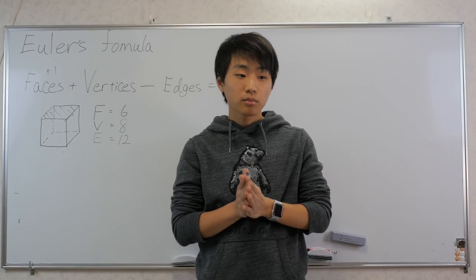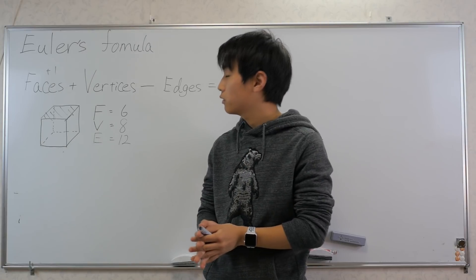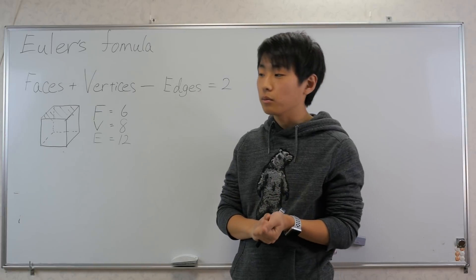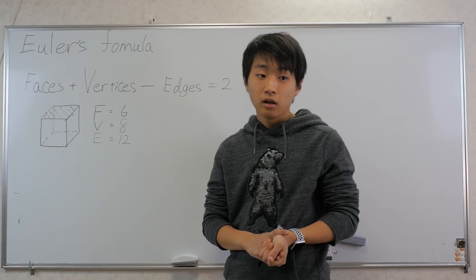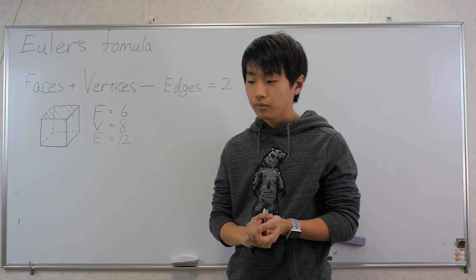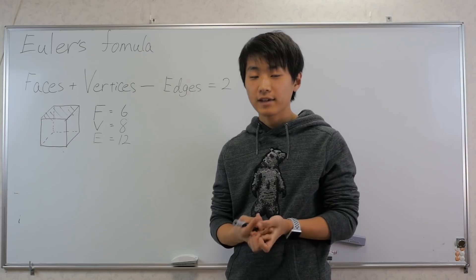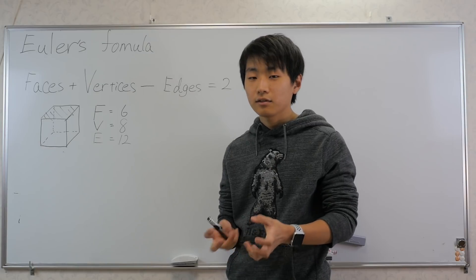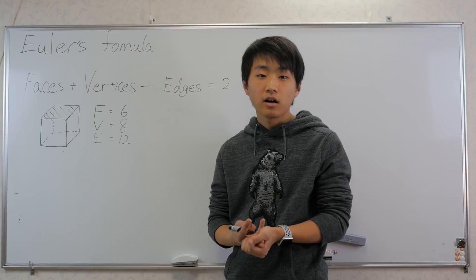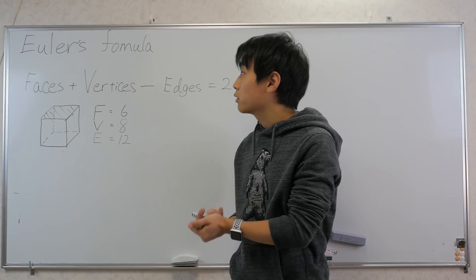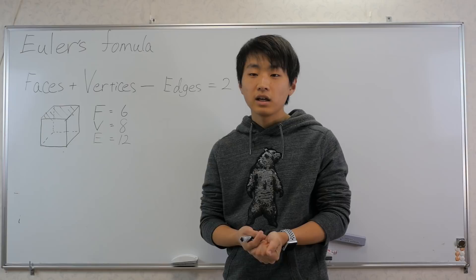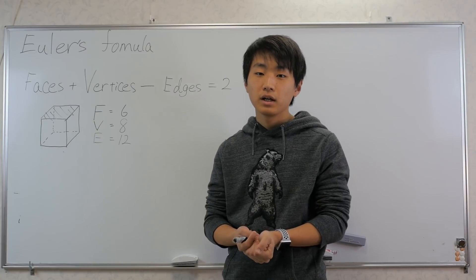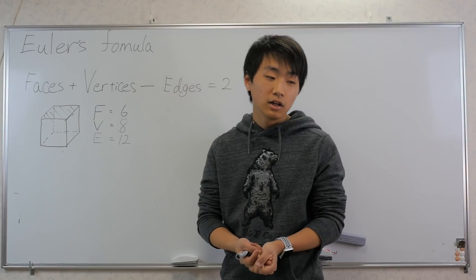Hello, today I'm not actually solving a problem but I would like to introduce Euler's formula for polyhedrons. It's a very popular formula, easy to understand, and it's in many textbooks, at least in the Japanese curriculum I know of. However, it's not well explained in any of the textbooks, and I didn't find many YouTube videos explaining it deeply. My teacher back in high school didn't explain how Euler derived this formula, but I remember vividly how my algebra teacher explained it to me, and I'd like to share that with you.